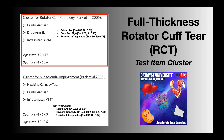If you suspect that your patient has a rotator cuff pathology, you might want to consider these three tests in the cluster: the painful arc sign, the drop arm sign, and the infraspinatus manual muscle test, also called the resisted infraspinatus test.